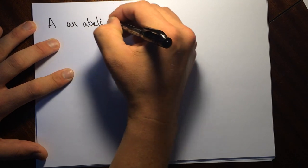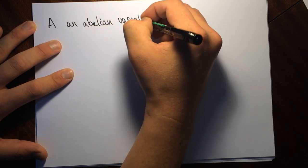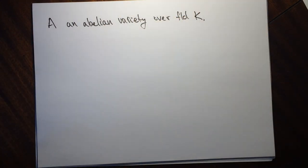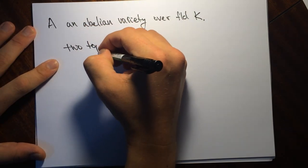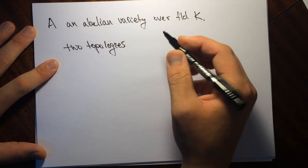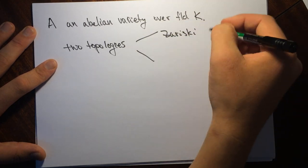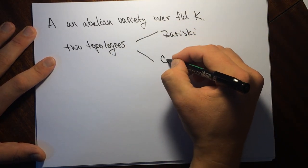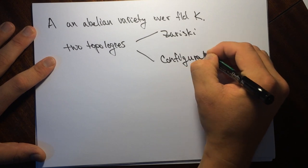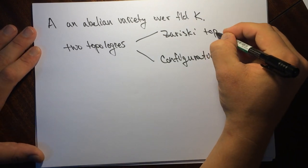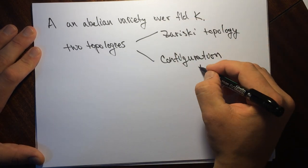Here is the setup: A is going to be an abelian variety over a field k. There are two topologies we can consider. There's the Zariski topology — this is cut out by the zeros of polynomial equations — and then there's the configuration topology. I'm going to explain how these two things are related.